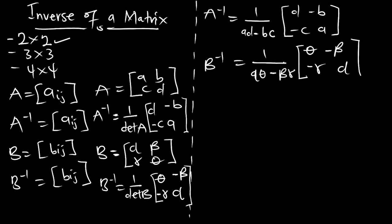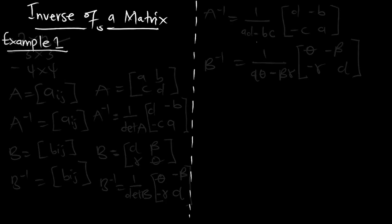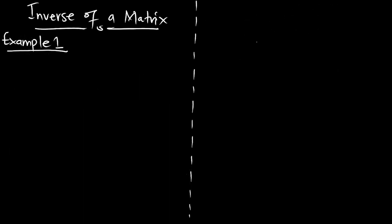So with this, you'll be able to find the inverse of any matrix. In summary, A inverse equals 1 over (AD minus BC), multiplied by the matrix [D, -B; -C, A]. For matrix B, its inverse is 1 over (alpha·theta minus beta·gamma), multiplied by the corresponding matrix. Let's check out an example.